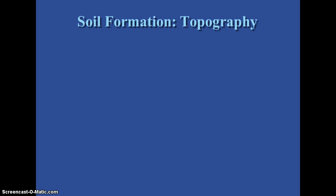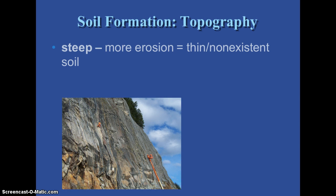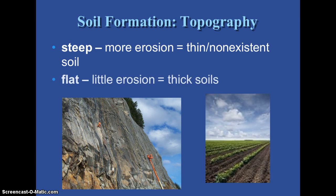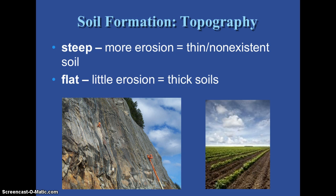Starting with topography — topography is the shape of the land. If it's a steep slope, you're going to have more erosion and you'll have very thin or non-existent soils. Whereas on flat land, you're not going to have that erosion, so your soils are going to be much thicker and form much quicker.